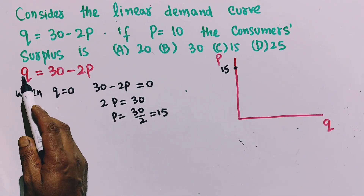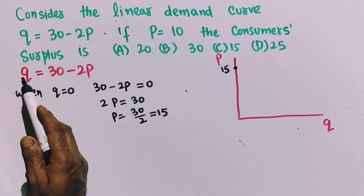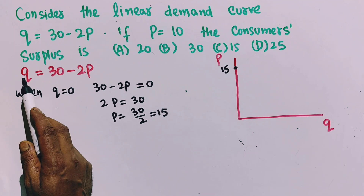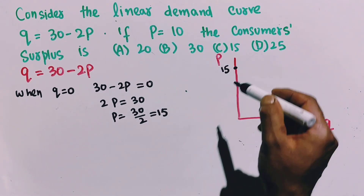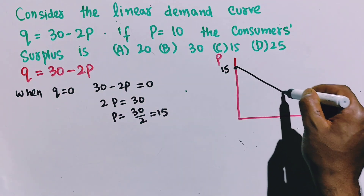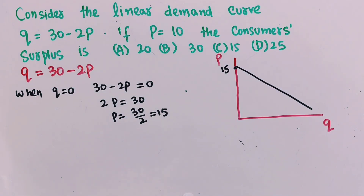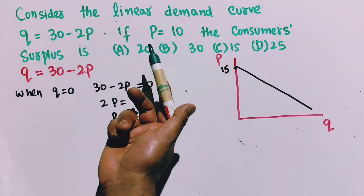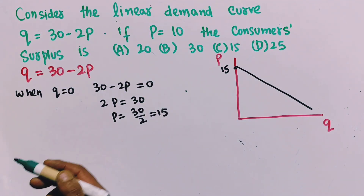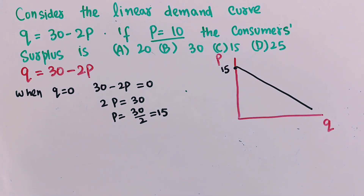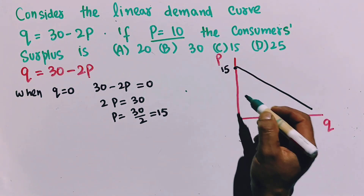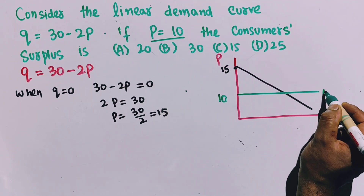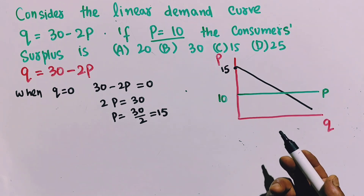This is a downward sloping demand function because there is a negative relationship between quantity demanded and price — if price decreases, quantity demanded increases, as shown by the negative sign. This is our demand function. We are told to find out the consumer surplus when P = 10, meaning the market price is $10.